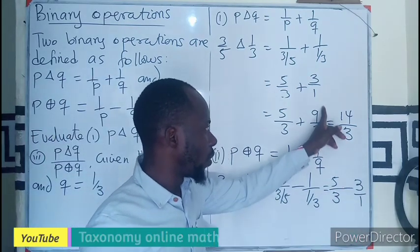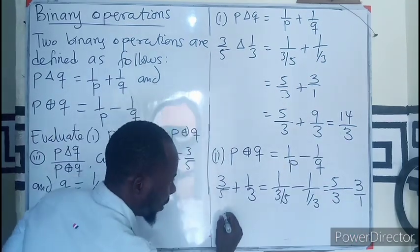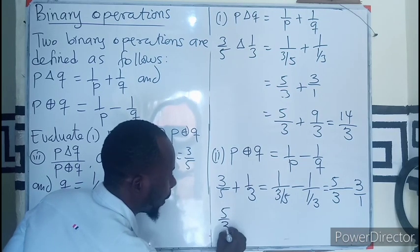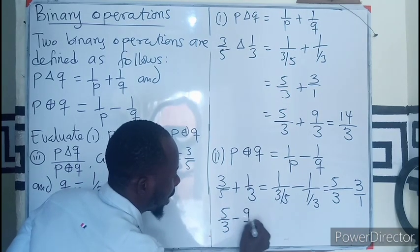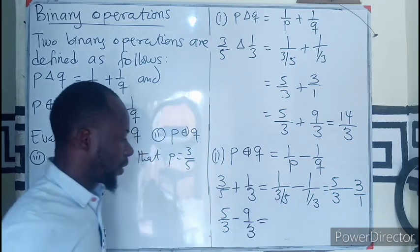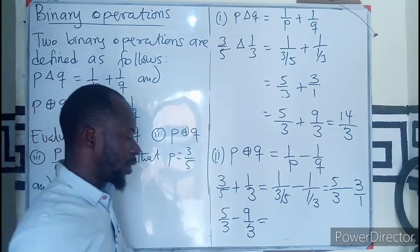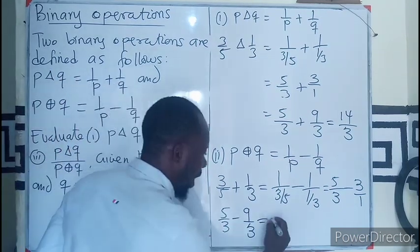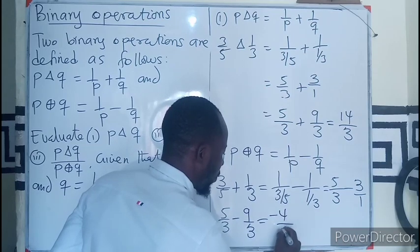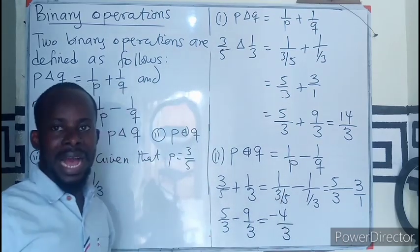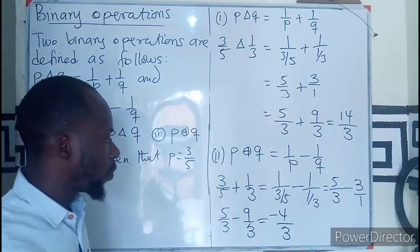This changing can also happen here to give me 5 over 3 minus 9 over 3. With the same denominator, we subtract the numerators, so we have negative 4 over 3 as our answer.